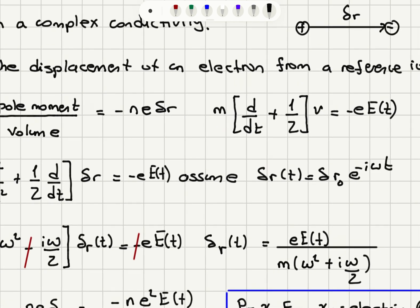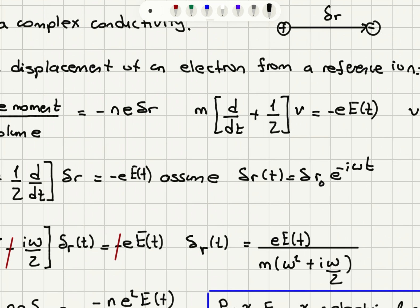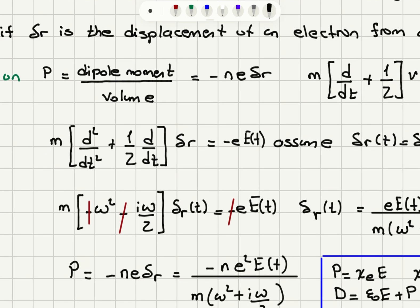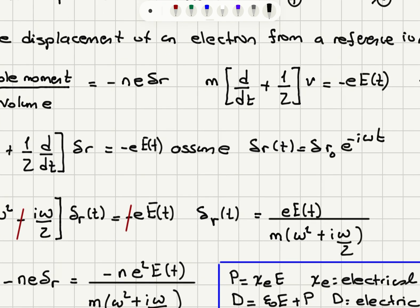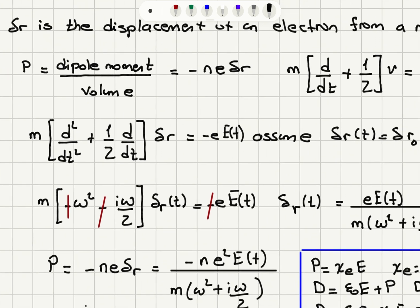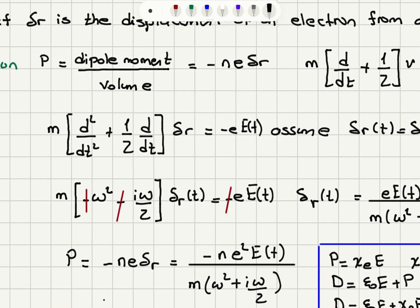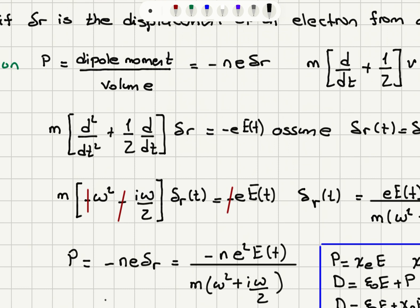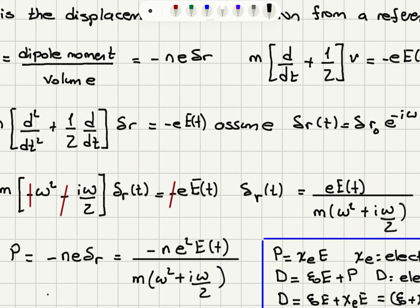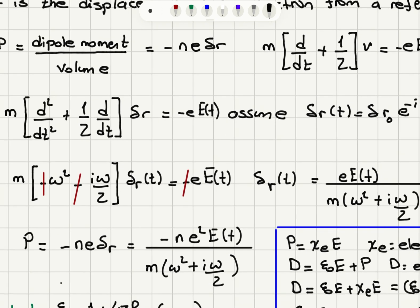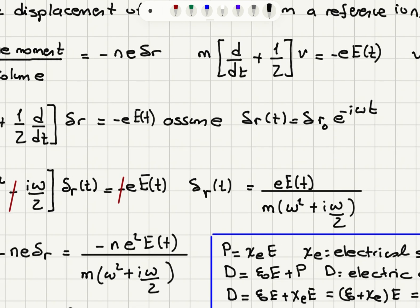Taking the second derivative of delta R gives minus omega squared, and the first derivative gives minus i omega. So we have (minus omega squared minus i omega over tau) times m times delta R(t) equals minus e times the electric field. The minus signs cancel, so delta R(t) equals e times the electric field divided by m times (omega squared plus i omega over tau). This is our expression for the displacement.